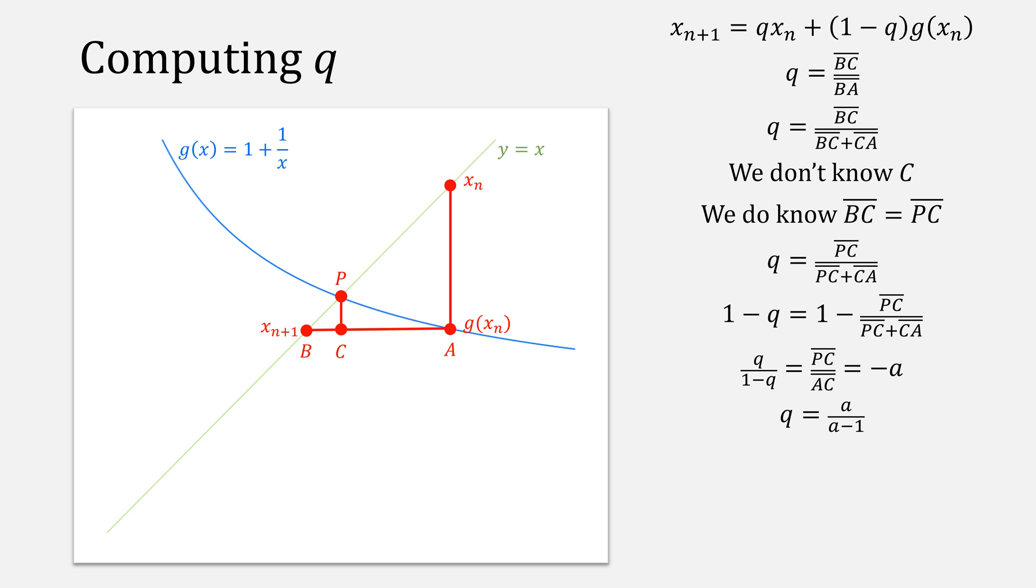And then we can use this equation to compute q. Here a is some value of g prime between a and p. We can approximate it using this equation here. And since this is fixed point iteration, we can use this equation to compute a.